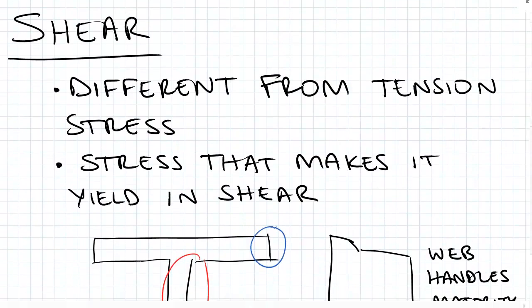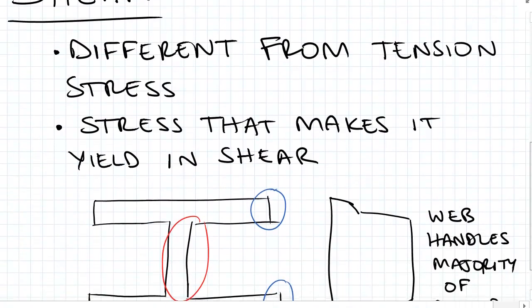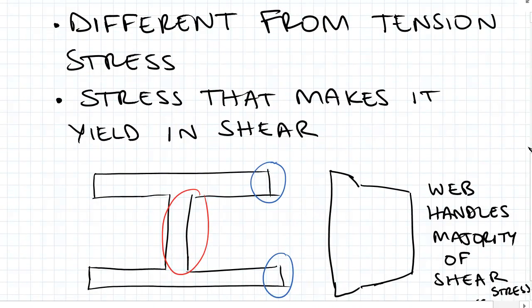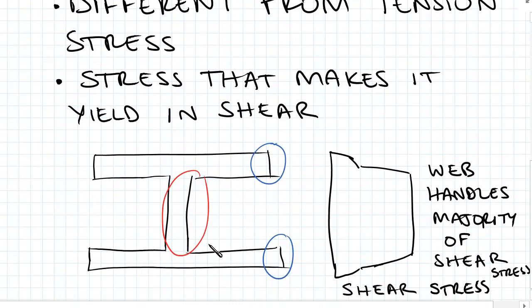So shear stress, it's important to understand that it's different from tension stress that we normally deal with. It's the stress that makes an I-beam yield in shear. So here I have in blue the flanges, and we can see that the shear stresses are quite low relative to the red, which is the web, and we see we have quite high shear stresses.